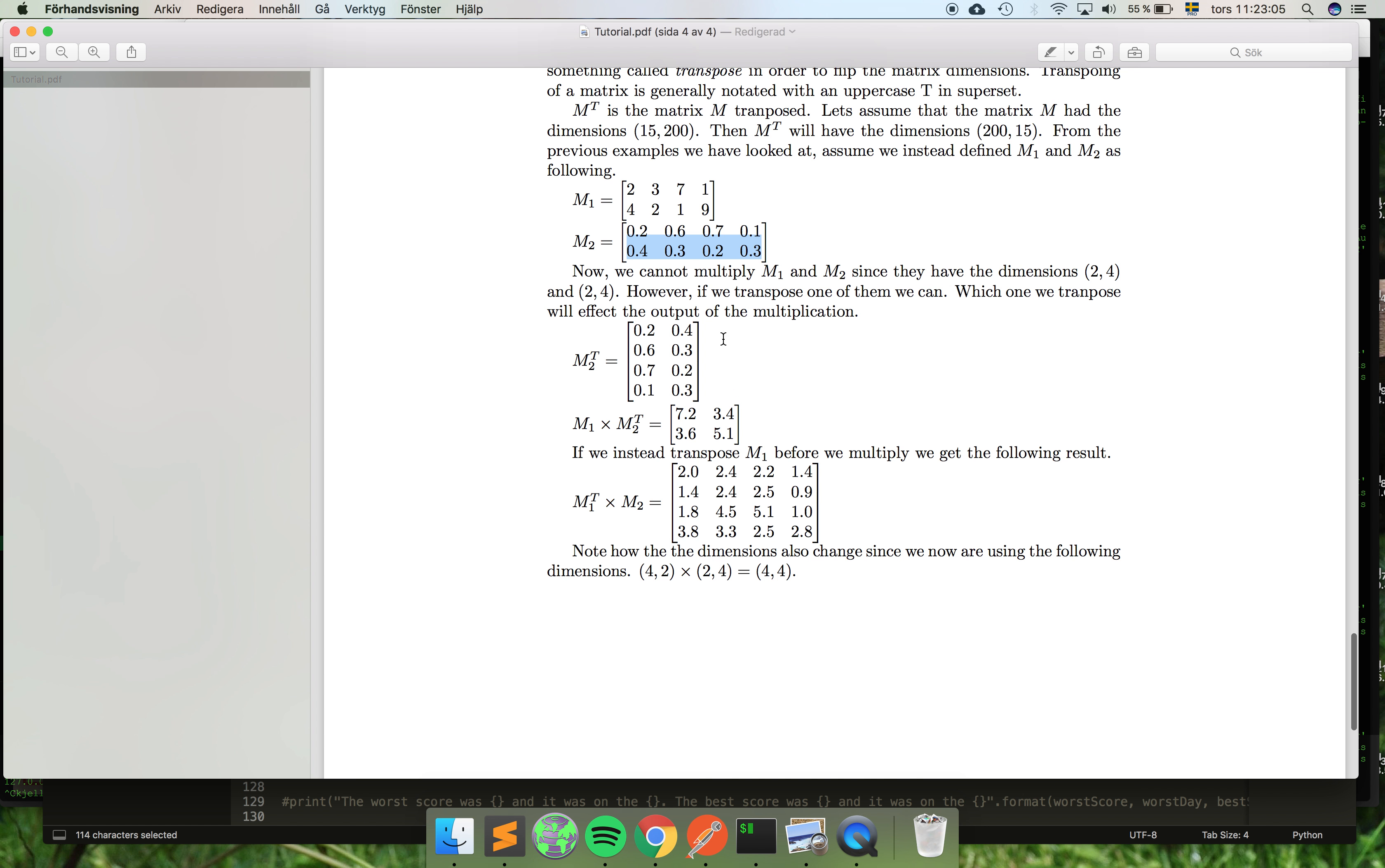And if you multiply them together, you're gonna get the—or sorry, it's gonna be a 2 by 2 matrix if you transpose M2, because it's gonna be 2 and then this transpose is gonna be 2, so you're gonna get a 2 by 2 matrix. So you're gonna get these values right here.